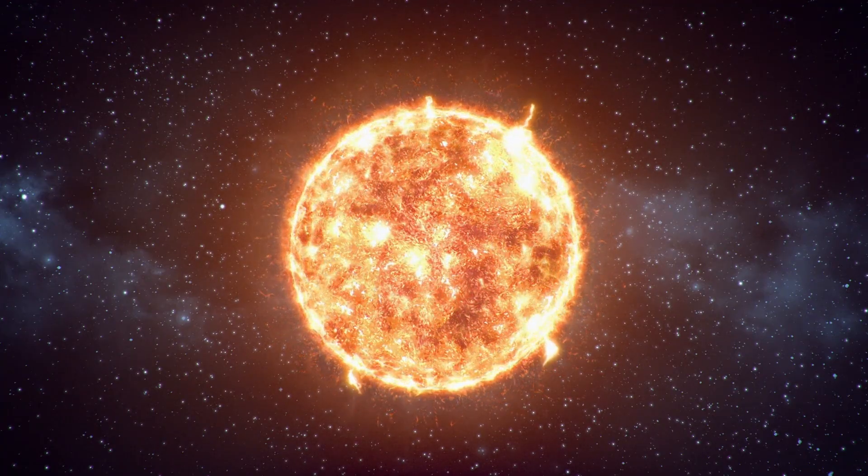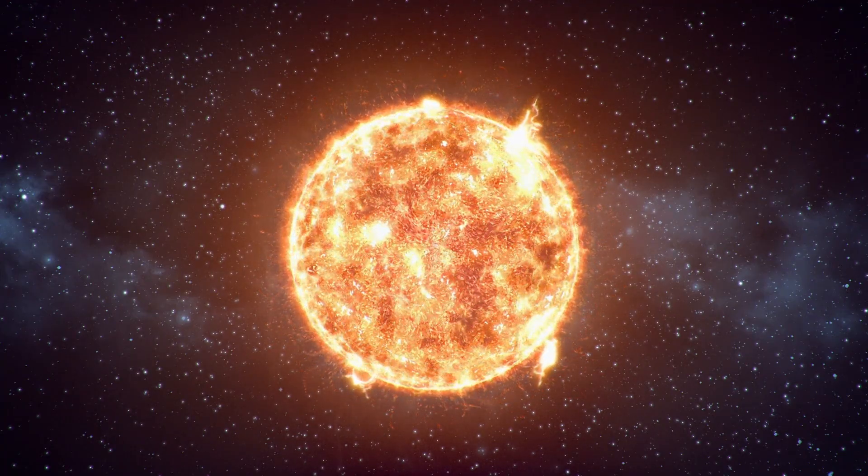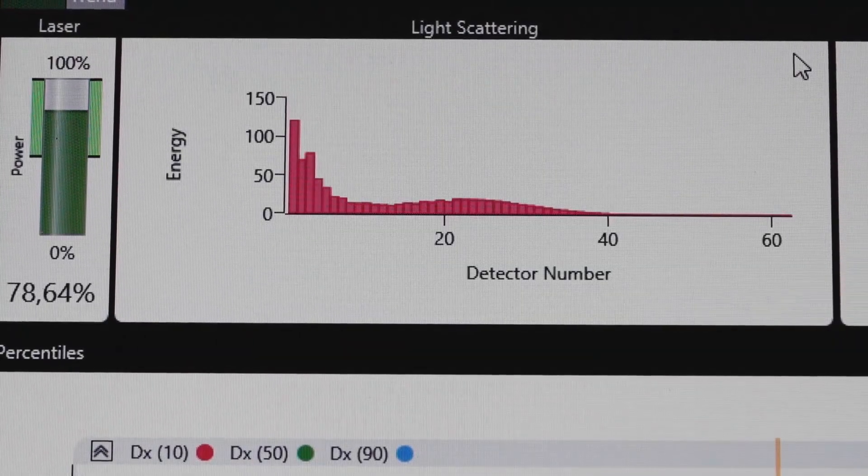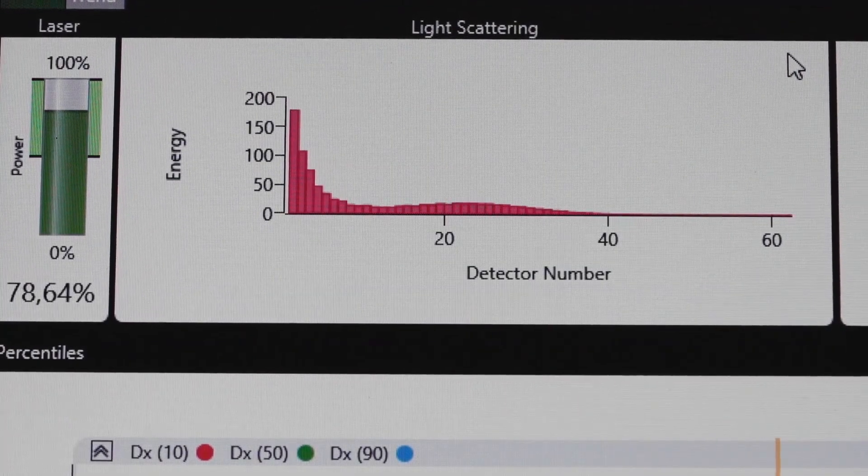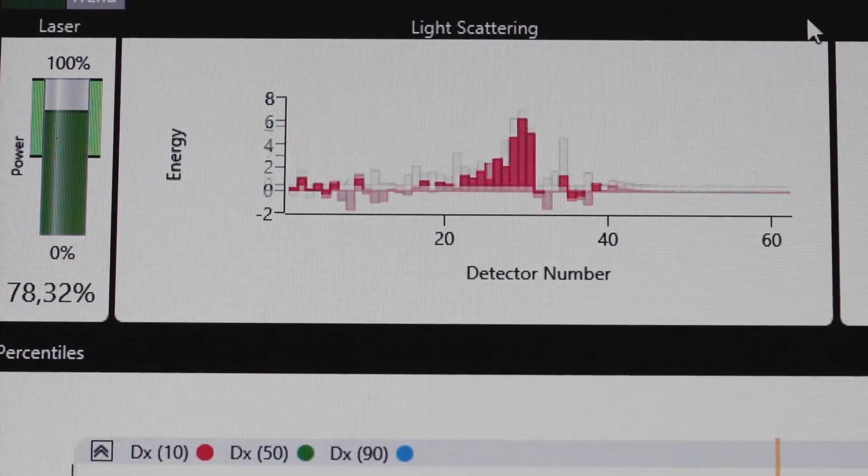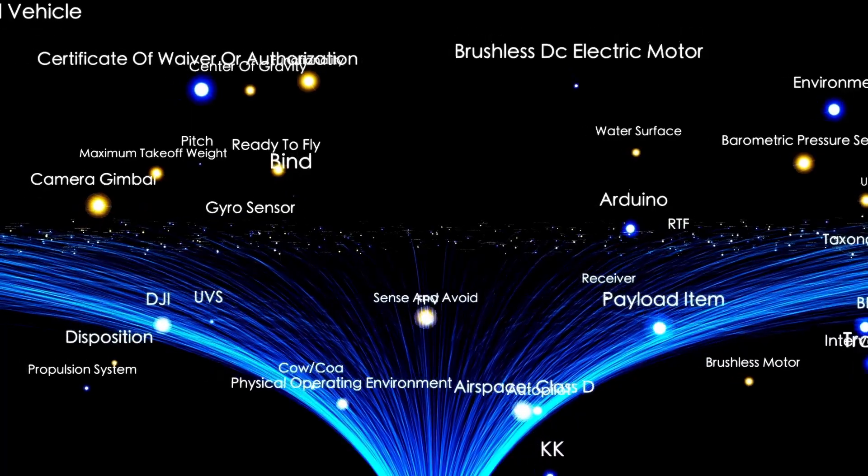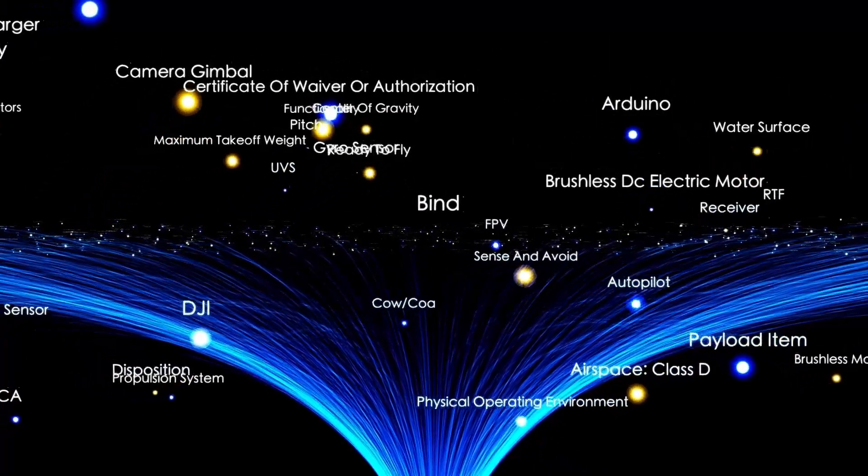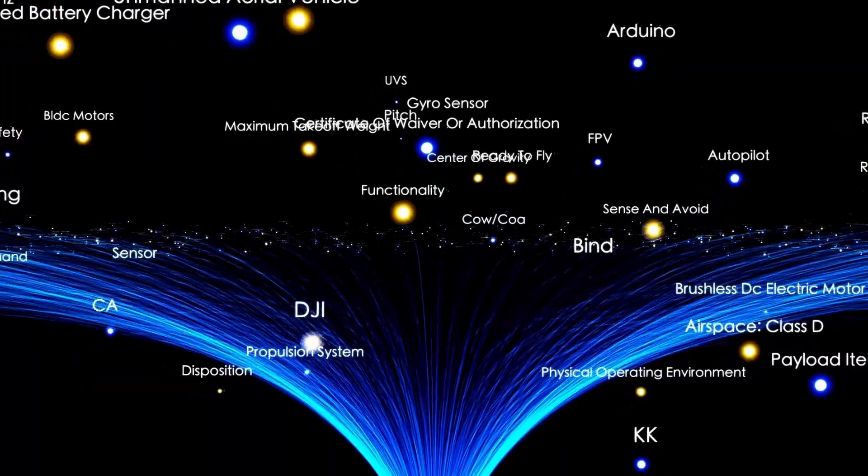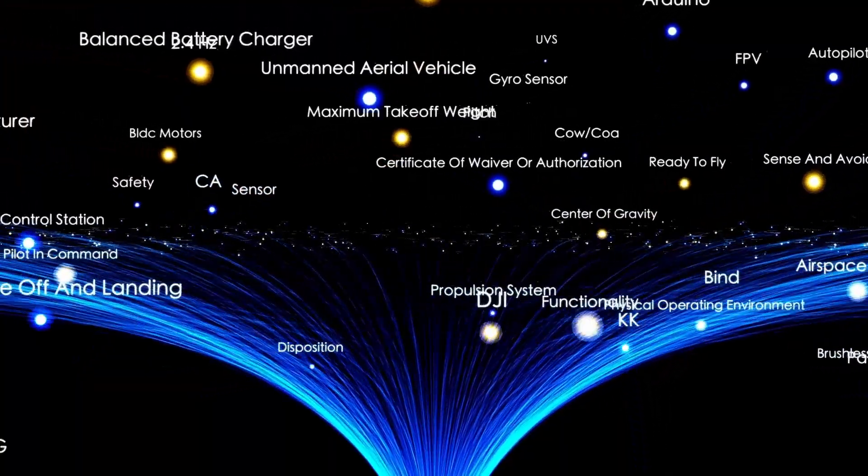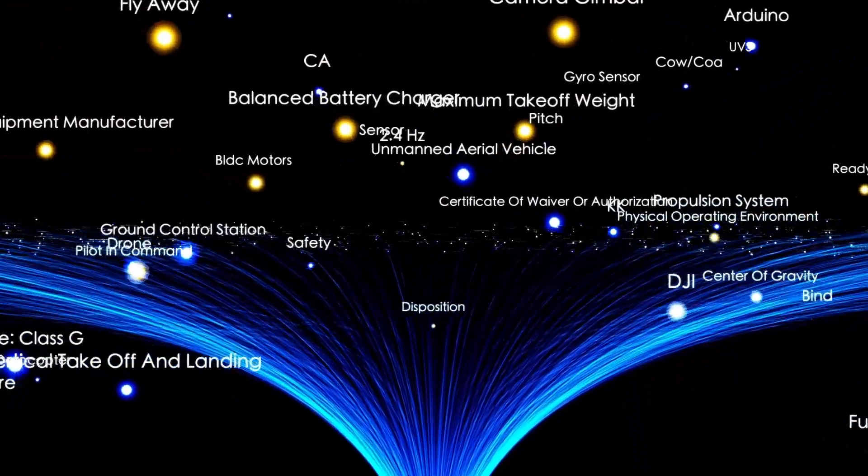This is not an asteroid from our belt, nor a comet looping back after millennia. Three-Eye Atlas comes from somewhere else, somewhere unimaginable. It is an emissary from beyond our star's dominion, a shard of another system, perhaps born in the crucible of a distant supernova or cast off from a world long gone cold.